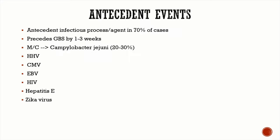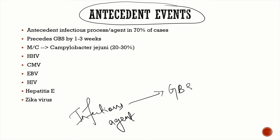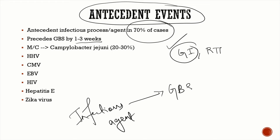Most of the time there will be some antecedent event that triggers GBS, usually in the form of an infectious agent. In 70 percent of GBS cases, there is an antecedent infection which precedes GBS by one to three weeks. The infectious process can take the form of a GI tract infection or a respiratory tract infection, with gastrointestinal infections being more common.